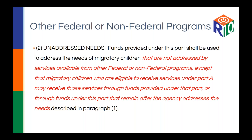The first part says funds under this part shall be used to address needs of migratory children not addressed by other federal or non-federal programs. In short, if there are needs unique to this population that aren't being met elsewhere, I can use my Title I Part C funding. The second part says migratory children eligible for services under Part A — Title I Part A — may receive those services through that funding. Don't forget you can use Title I Part A funding if those migratory children are eligible for it. Think of Title I Part C as in addition to, above and beyond what you're already providing.